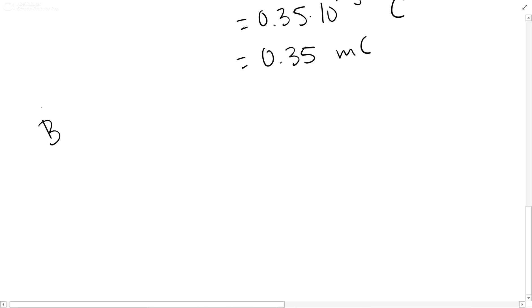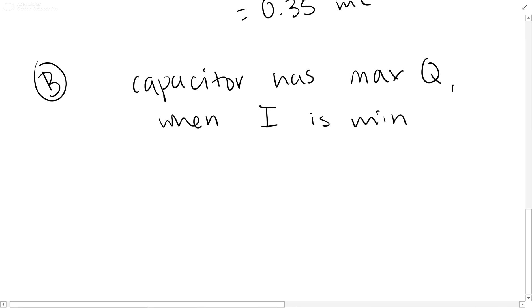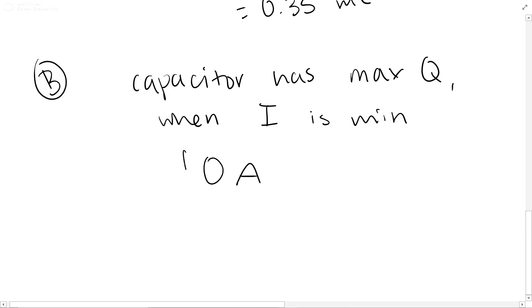Part B is asking for the current at this time. So this is when the capacitor is at max charge, which happens when current is a minimum. So minimum current would be zero amperes, and that's your answer for B.